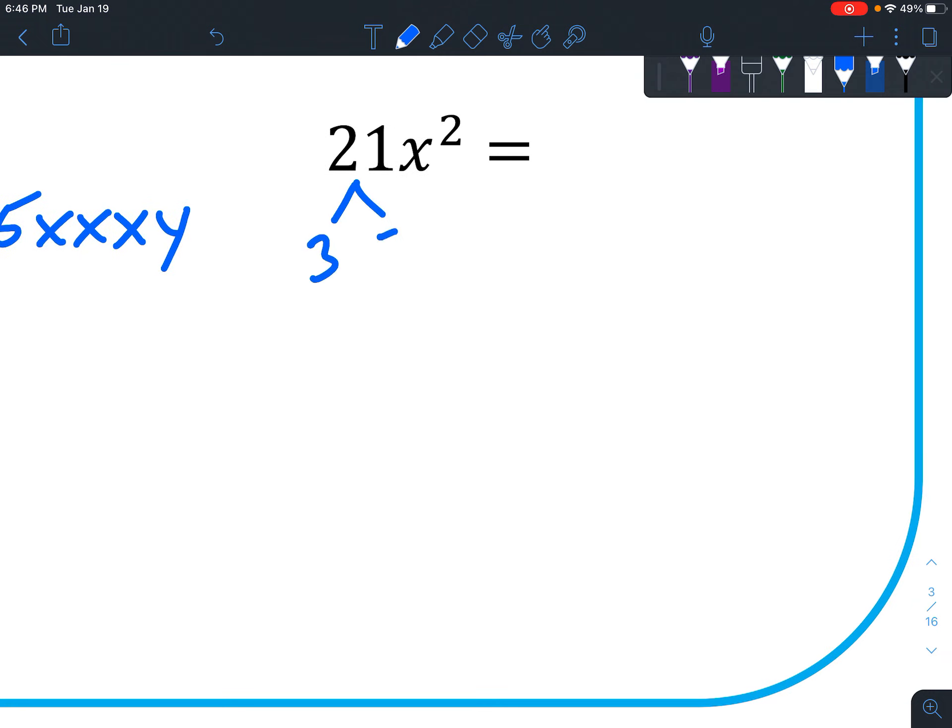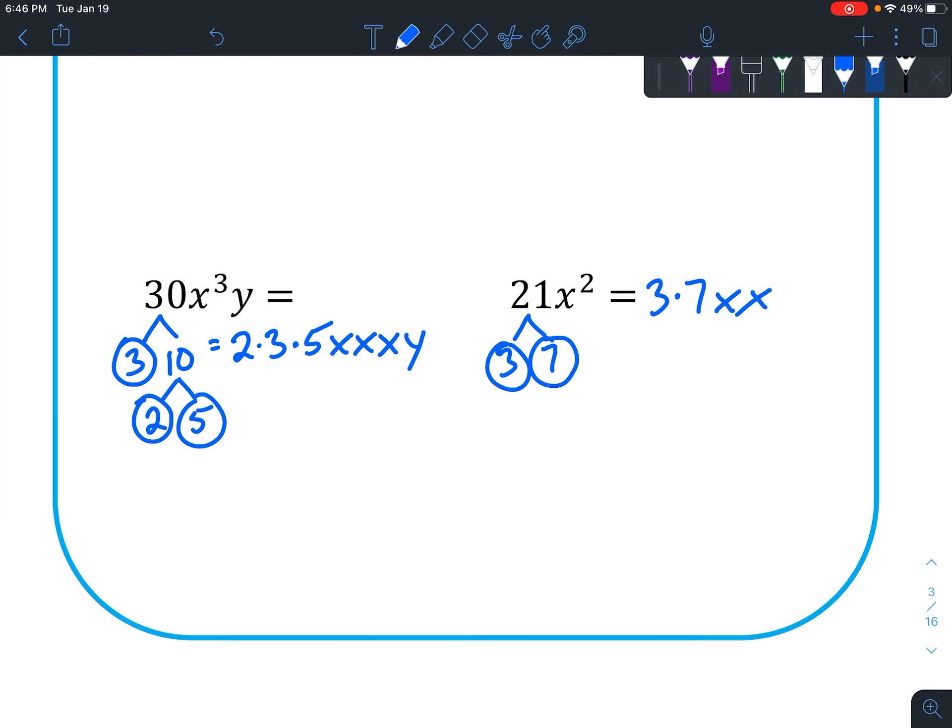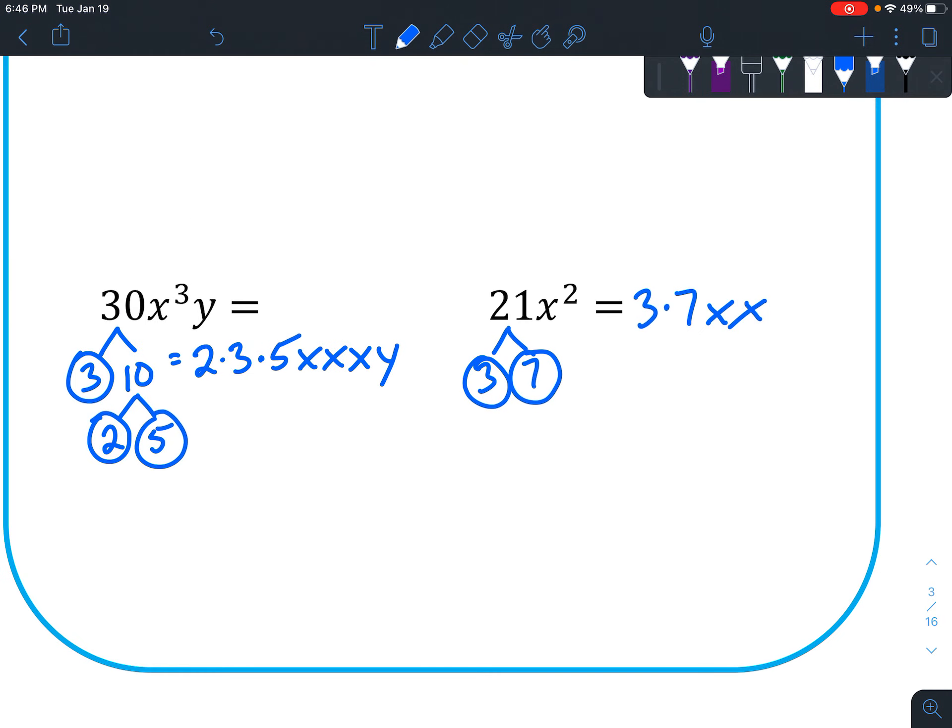21 is 3 times 7. And that's it. So 3 times 7, x, x. Those are the smallest pieces. Talk to you guys later. Bye!